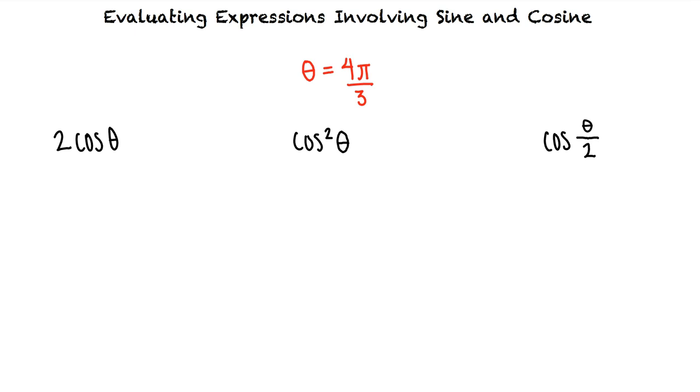Looking at the first expression, we substitute 4π/3 in for θ. Cosine of 4π/3 is negative 1/2, and 2 times negative 1/2 equals negative 1.